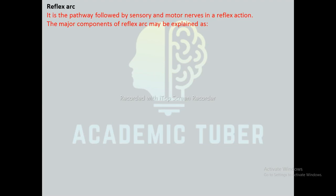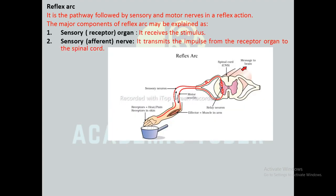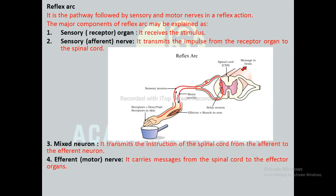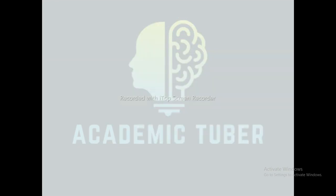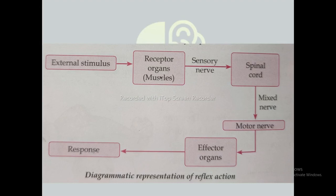The reflex arc is the pathway followed by sensory and motor nerves in a reflex action. Its major components are: sensory or receptor organs, which receive the stimulus; afferent nerves, which transmit the impulse from the receptor organ to the spinal cord; mixed neurons, which transmit instructions from the afferent to the efferent neuron; and motor nerves, which carry messages from the spinal cord to the effector organs.